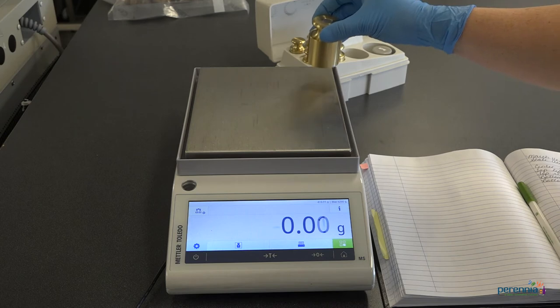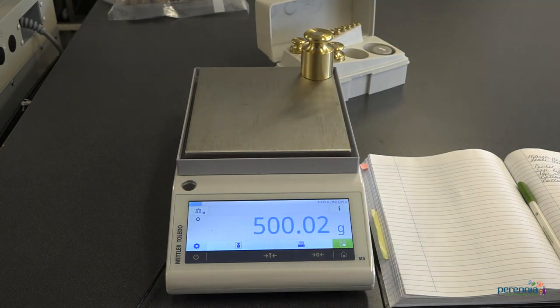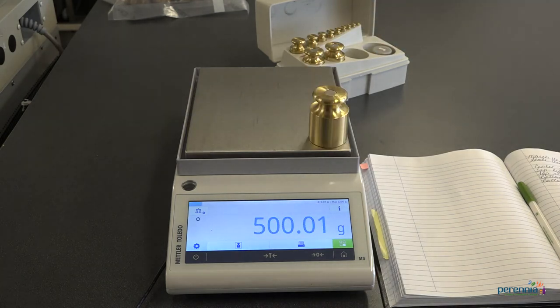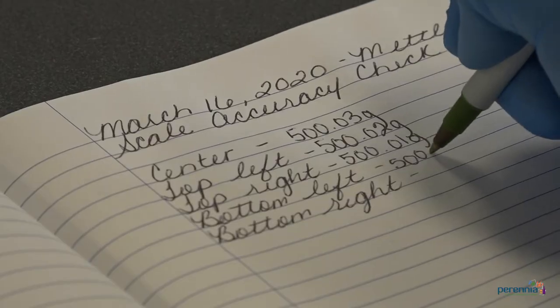Step 4: repeat but this time place the known test weights in each corner of the scale. Record findings.